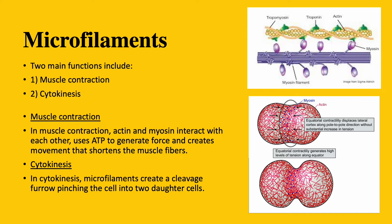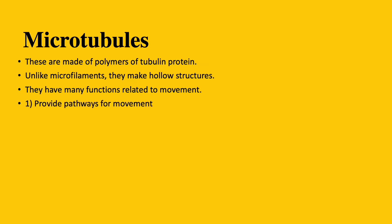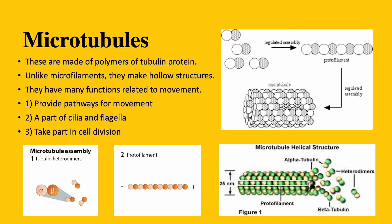That covers microfilaments. Now let's go to microtubules. Microtubules are made of polymers of tubulin protein. Unlike microfilaments, microtubules make hollow structures like you see in the image here. The functions of microtubules are mostly related to movement. For example, microtubules provide a pathway for movement inside the cell. They are part of cilia and flagella, and they take part in cell division.